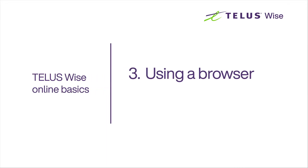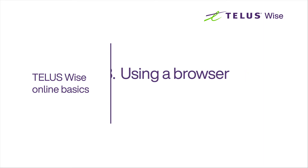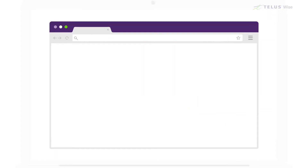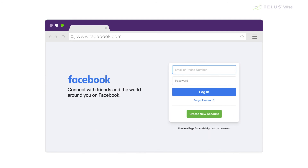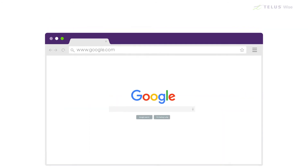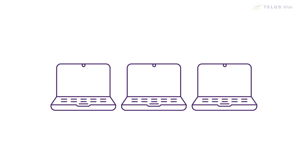To access the Internet and visit websites from a laptop or desktop computer, you usually use a program called a browser. To use Facebook or Google on a computer, for example, you would open your browser, then go to the Facebook or Google website. There are a few different types of browsers, but most computers come with one already installed. Chromebooks come with Chrome, PCs with Edge, and Macs with Safari.